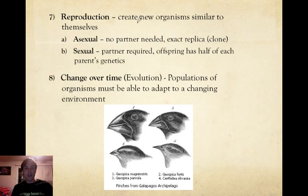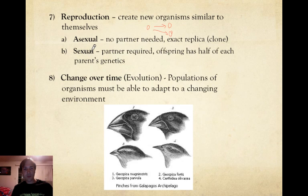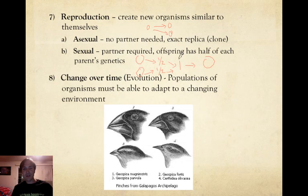Characteristic number seven is reproduction — creating new organisms similar to themselves. All organisms must be able to do that. There are two different categories. Asexual reproduction requires no partner; you basically create an exact replica or clone of the original — a cell splits to make two cells identical to the parent. Sexual reproduction, on the other hand, does require a partner. You have two parents, and they each provide half of their genetic information. When those two halves come together, we get the offspring. Sexual reproduction creates a genetically different offspring, meaning the offspring is not identical to either parent.